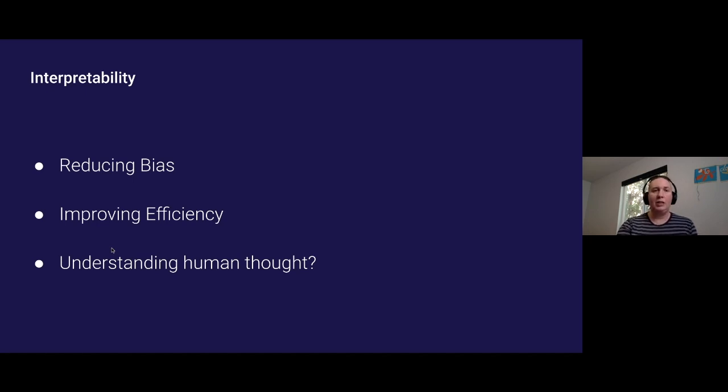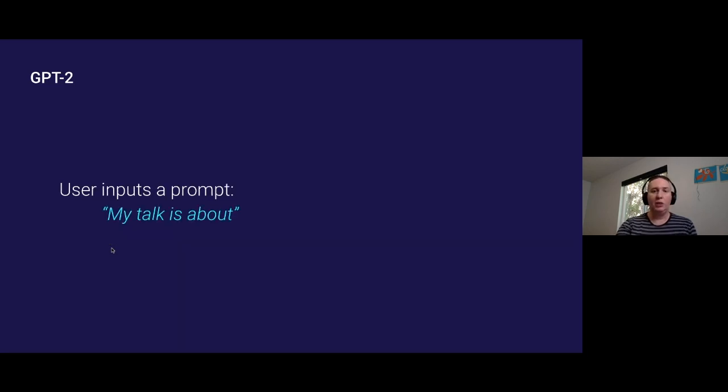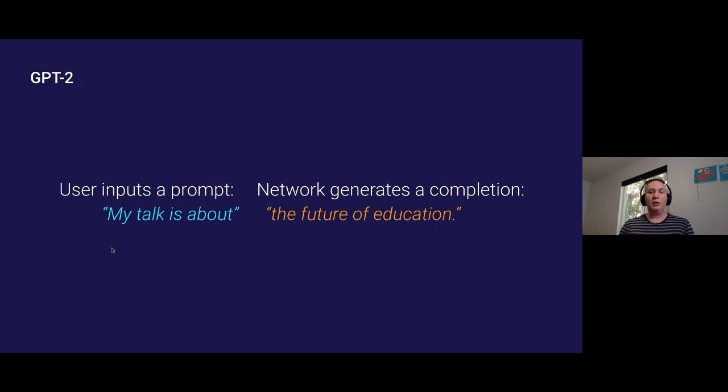So I decided to dig into interpretability by analyzing GPT-2. This was a state-of-the-art language generation, language modeling network that OpenAI released about a year and a half ago. And the way this network works is you give it some input, some text, and it generates output. So this is an actual example. I fed the phrase 'my talk is about' into GPT-2, and it said 'the future of education.' You can give it the beginning of a sentence and get the end. You can give it a paragraph and get an essay.